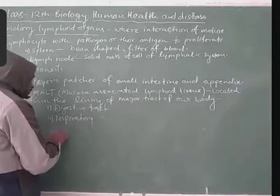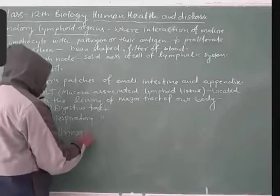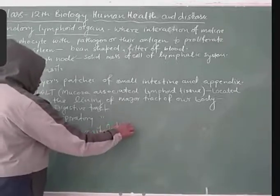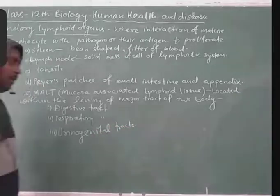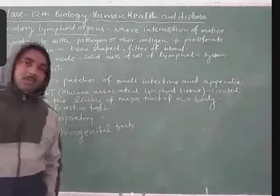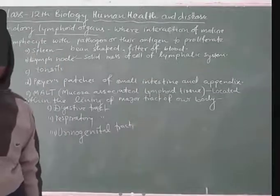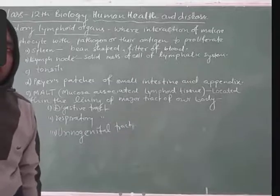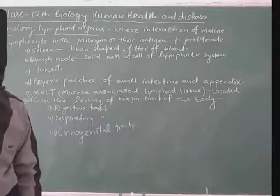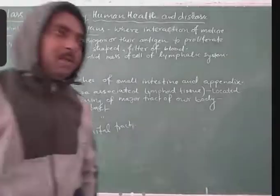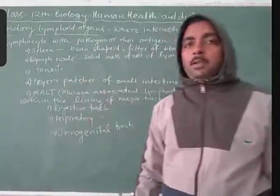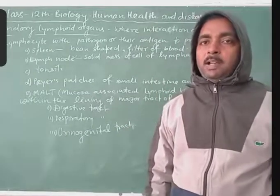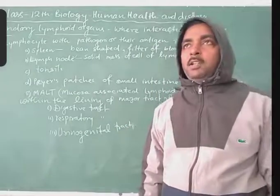MALT is found in the digestive tract, respiratory tract, and the urogenital tract. These are the major tracts of the body, and within the lining of these tracts, some patches of cells appear in the form of secondary lymphoid organs — small patches and groups of cells. So MALT is also a secondary lymphoid organ.